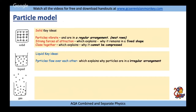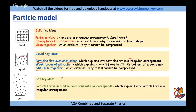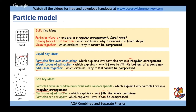In a liquid, particles flow over each other in an irregular arrangement with weak forces of attraction - this explains why they flow to fill the bottom of a container. They're still close together, so a liquid cannot be compressed. For a gas: particles move in random directions with random speeds in an irregular arrangement, with no forces of attraction - explaining why gas fills the whole container - and the particles are far apart, explaining why gas can be compressed.